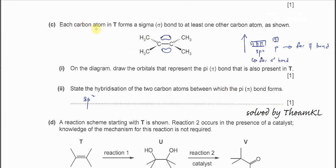Part C. Each carbon in T forms a sigma bond to at least one other carbon as shown. On the diagram, draw the orbitals that represent the pi bonds that are also present in T. For this one you just need to draw the electron cloud above and below the plane. This represents one pi bond. These two represent one pi bond. So what you need to do is just draw two electron clouds like this, which can represent the pi bonds.